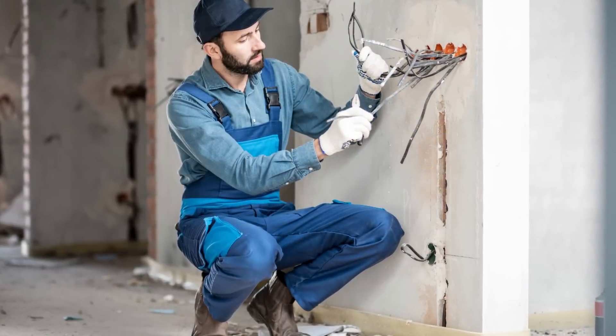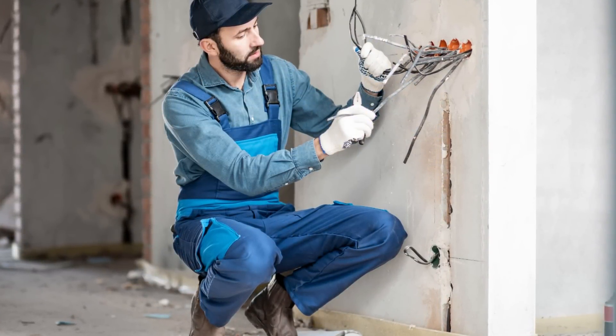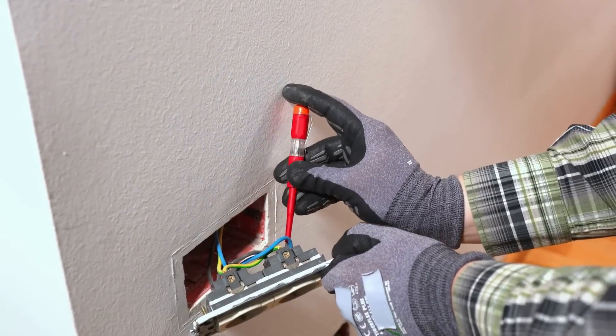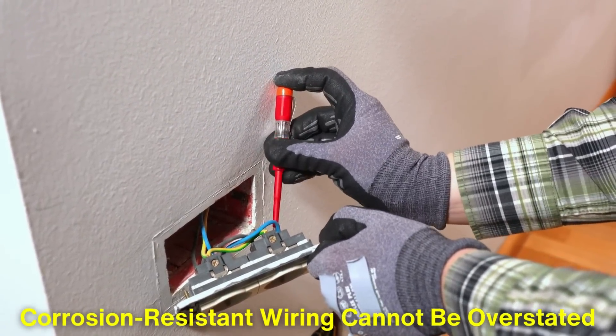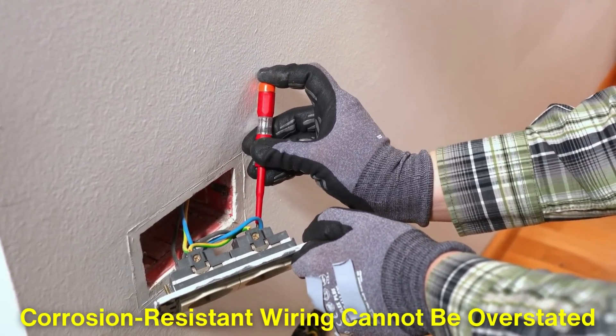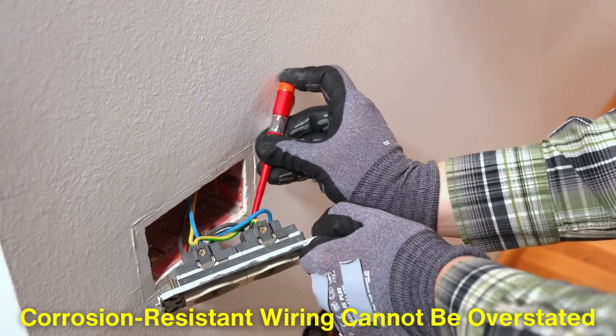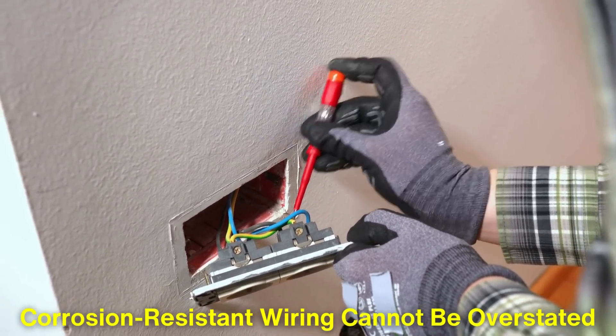This quality makes copper wiring suitable for both indoor and outdoor use, maintaining safety and conductivity even in challenging environmental conditions. The importance of reliable, corrosion-resistant wiring cannot be overstated, as poor wiring can lead to electrical failures, overheating, and potential fire hazards.